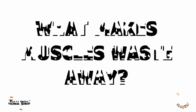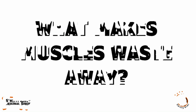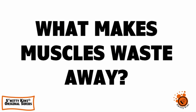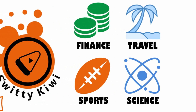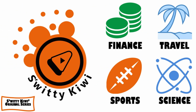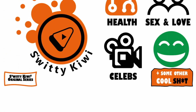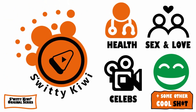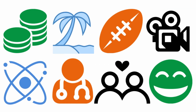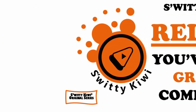What makes muscles waste away? Muscle wasting is a loss of muscle mass due to the muscles weakening and shrinking. Various factors contribute to muscle wasting, including malnutrition, sedentarism, some neurological diseases, prolonged illness and/or hospitalization, and swallowing problems. Find out how to prevent or reverse muscle atrophy now.